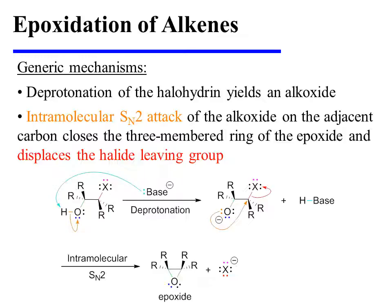An epoxide can be formed from a halohydrin simply by treating it with base. Deprotonation of the hydroxyl group affords an alkoxide. That alkoxide is nucleophilic and the adjacent carbon bears a leaving group. As a result, an intramolecular SN2 attack can occur in which the alkoxide attacks the adjacent carbon, displacing a halide, and thereby forming the three-membered ring of the epoxide.